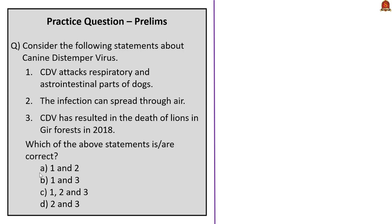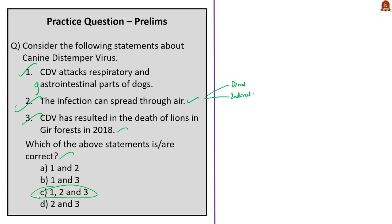The second question asks about the canine distemper virus. Statement 1 — CDV attacks respiratory and gastrointestinal systems of dogs — is correct. Statement 2 — the infection can spread through air — is correct, as CDV spreads through inhalation. Statement 3 — CDV caused the deaths of lions in Gir Forest in 2018 — is also correct. Since all three statements are correct, the answer is Option C: 1, 2, and 3.